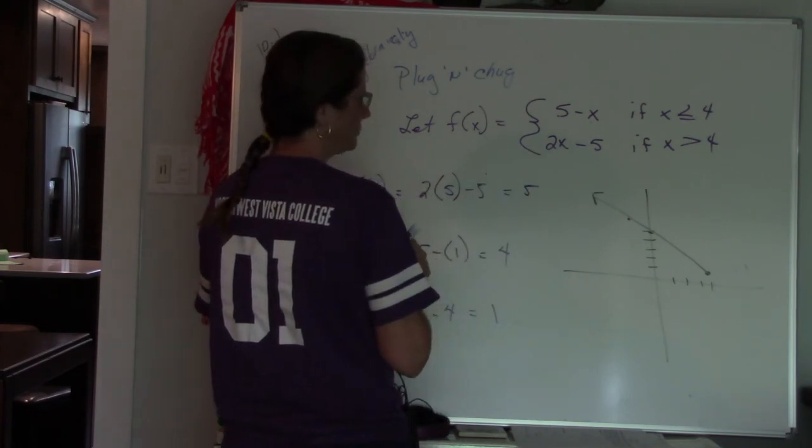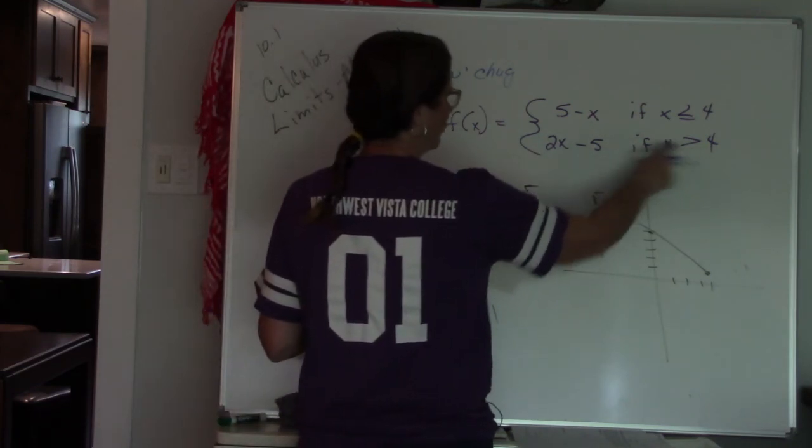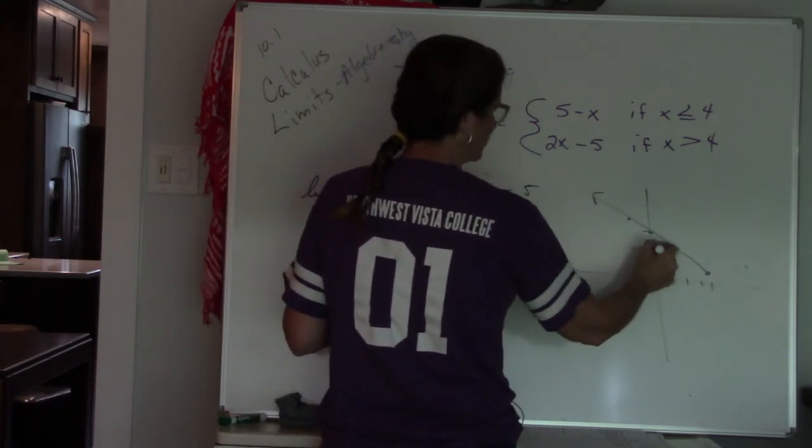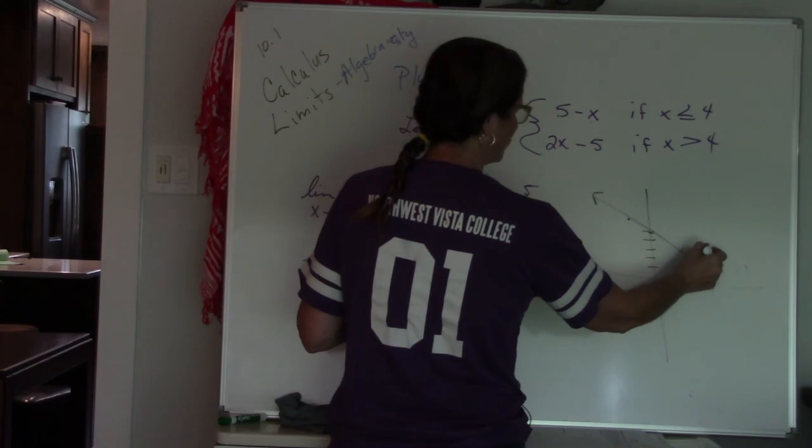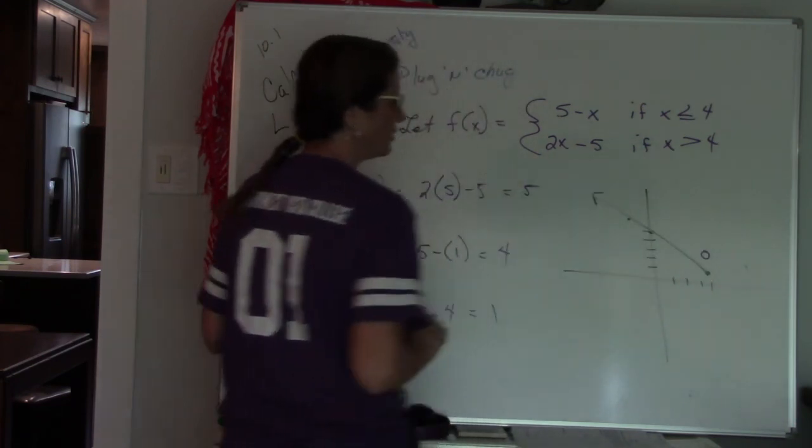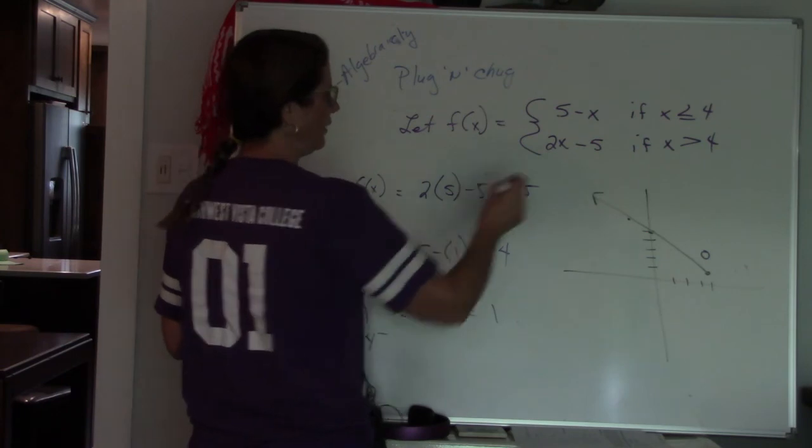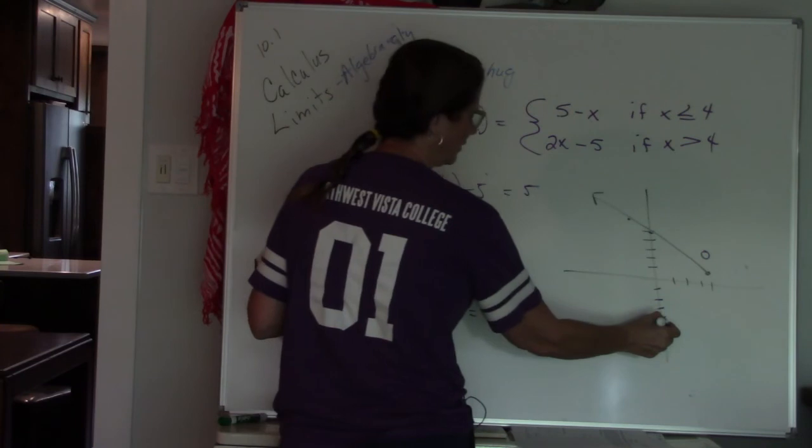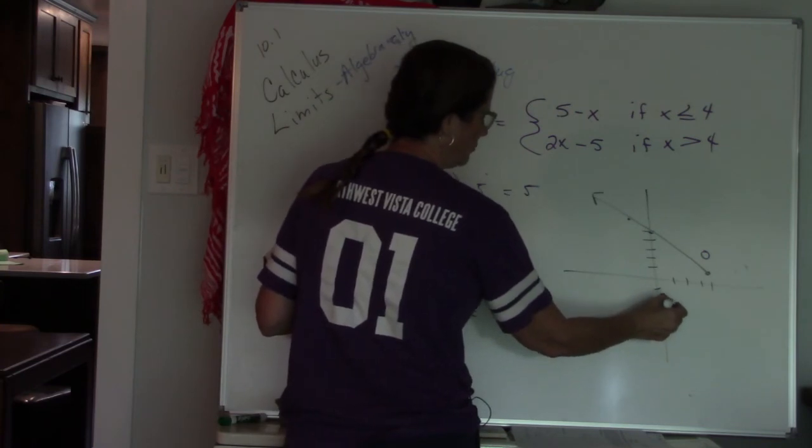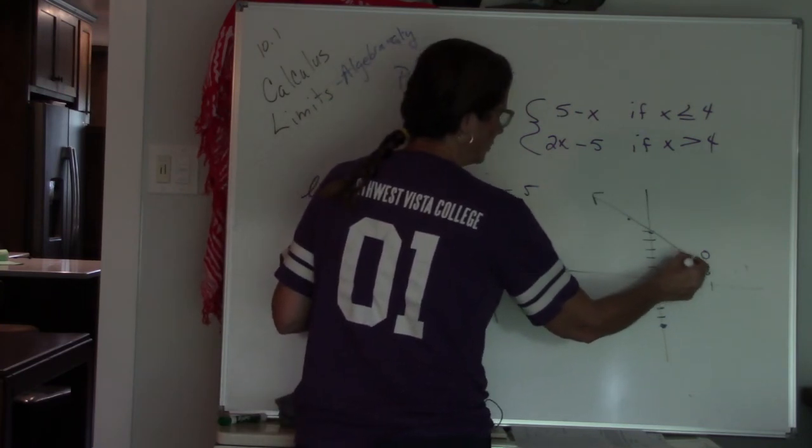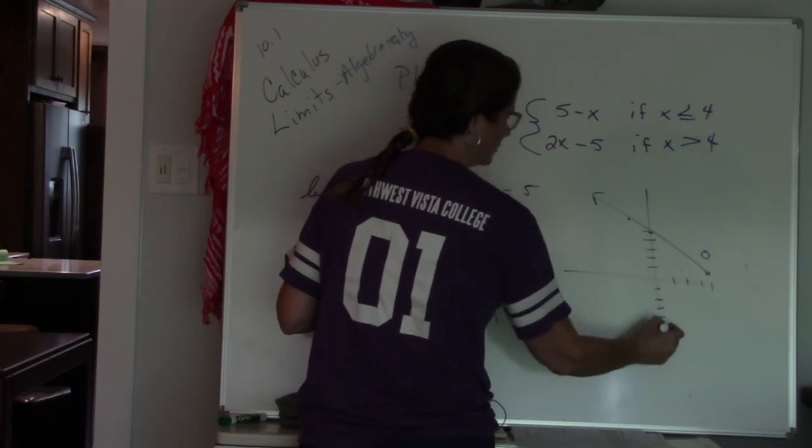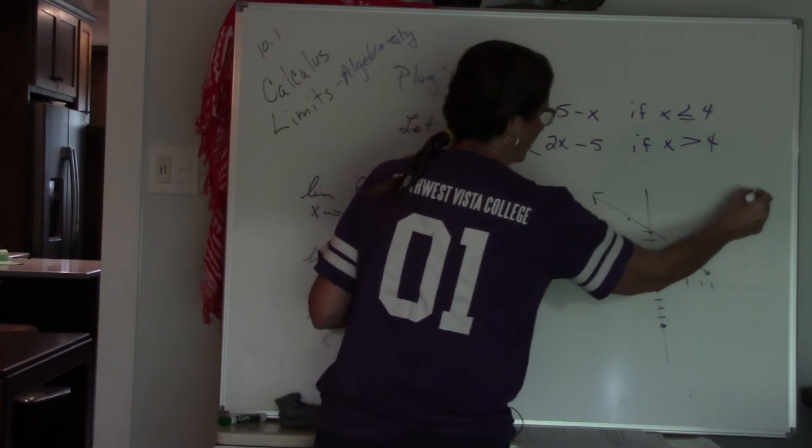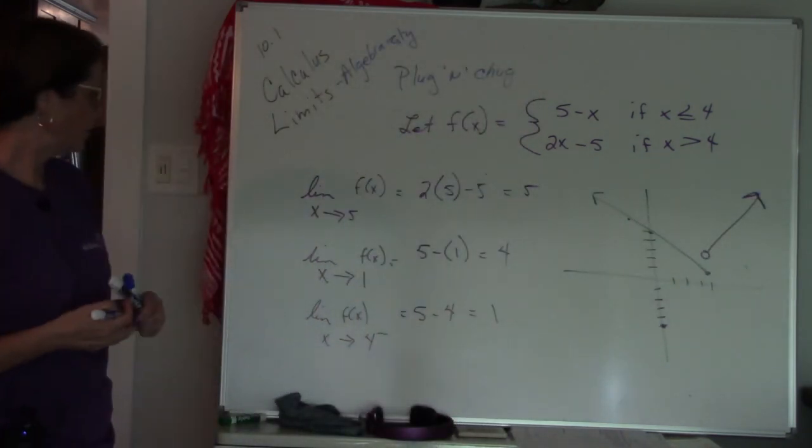For this one, I'm going to do it in purple. If I plug in 4 into here, 2 times 4 is 8, 8 minus 5 is 3. So I have 1, 2, 3, when x is 4, y is 3. But it's open because it doesn't include the 4. And then from there, I have 1, 2, 3, 4, 5. It crosses at negative 5, up 2 over 1, up 2 over 1, up 2 over 1. So it's going to look something like this. And it's going to go this way because it's only values greater than.